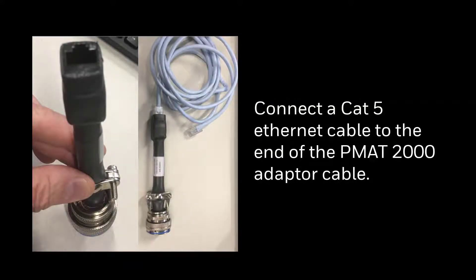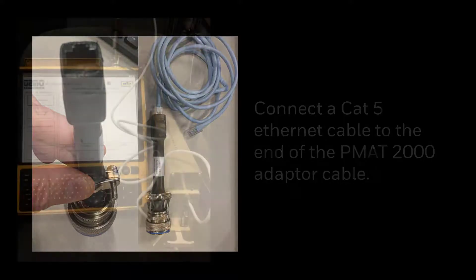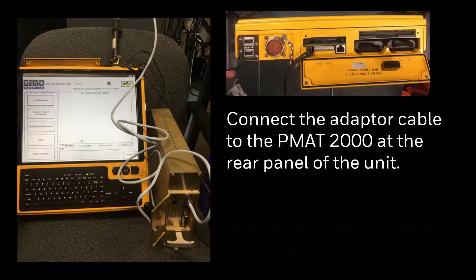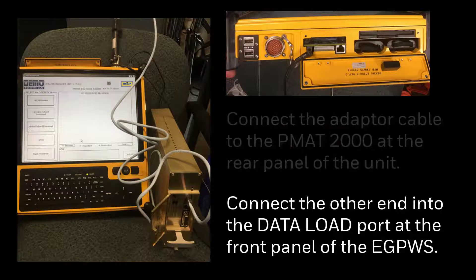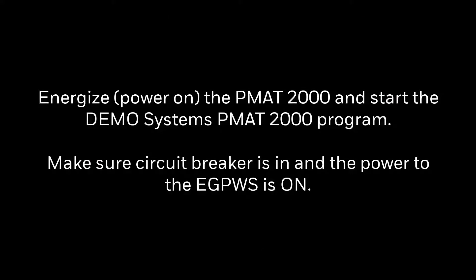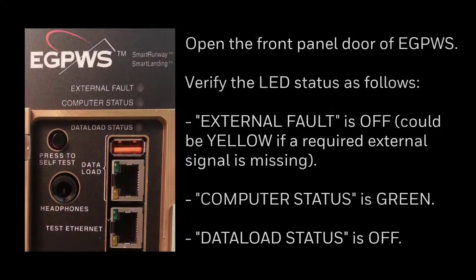Connect a CAT5 Ethernet cable to the end of the PMAT-2000 adapter cable as shown. Connect the adapter cable to the PMAT-2000 at the rear panel of the unit. Connect the other end into the data load port at the front panel of the EGPWS. Energize the PMAT-2000 and start the demo system's PMAT-2000 program. Make sure the circuit breaker is in and power to the EGPWS is on.